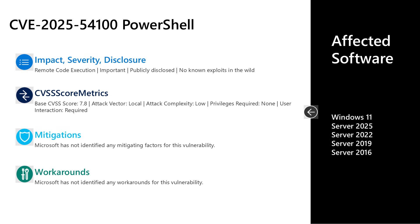Next, I'll talk to CVE-2025-54100. This is an important remote code execution vulnerability. This one was publicly disclosed, but no known exploits are out in the wild. It has a base CVSS score of 7.8. The attack vector is local, attack complexity is low, no privileges are required to leverage this, but user interaction is required to exploit it. There are no documented mitigations or workarounds. Affected software includes Windows 11 on desktop, as well as Server 2016, 2019, 2022, and Server 2025 on the server side.